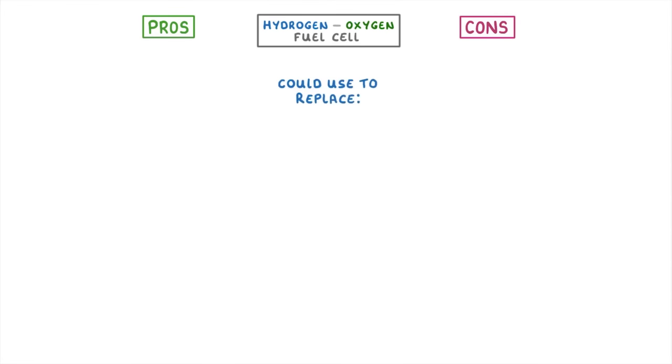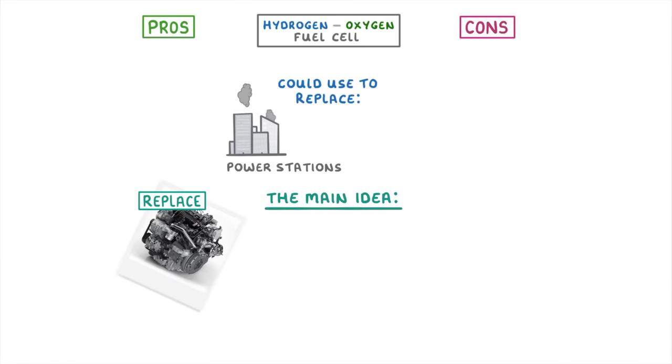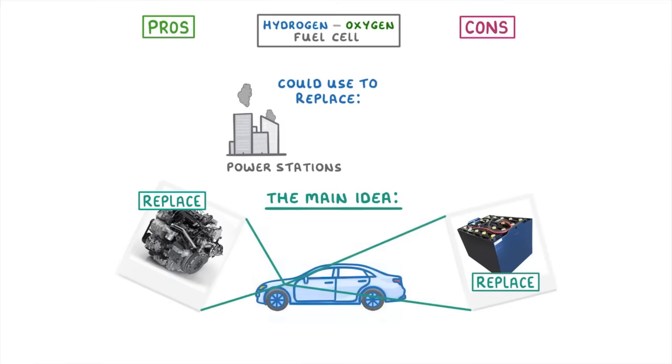The last thing we need to look at are the pros and cons of these hydrogen-oxygen fuel cells. Although we could use fuel cells to replace things like power stations, the main idea is to use them to replace the fossil fuel engines and batteries that we use in vehicles, both of which are polluting.